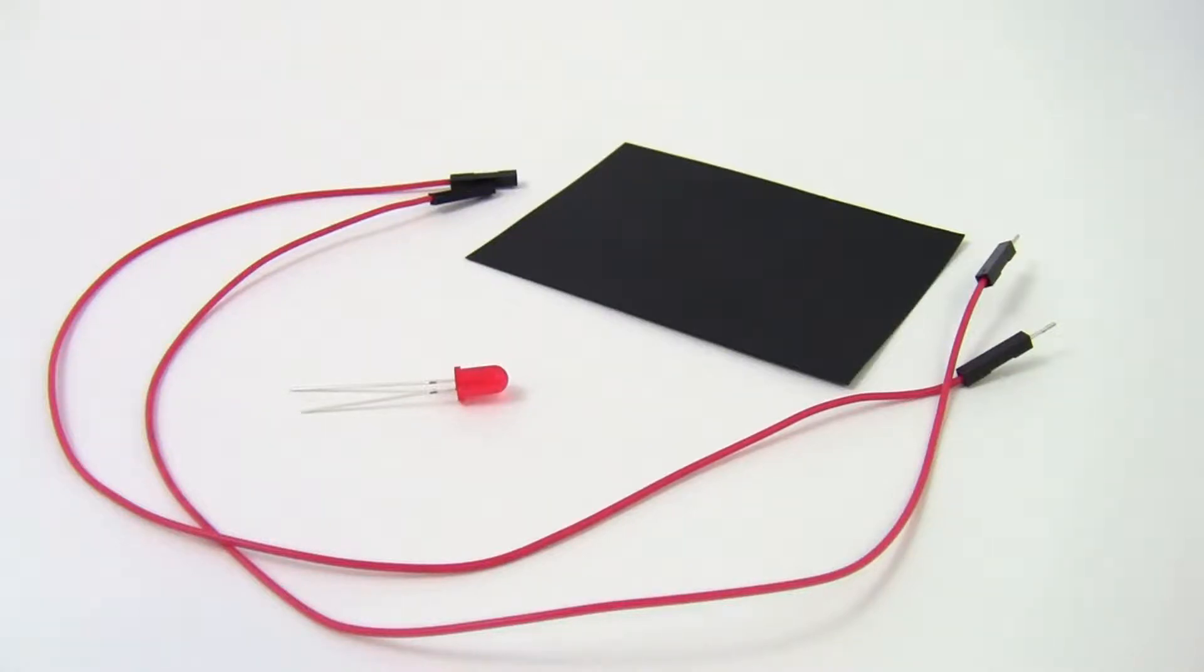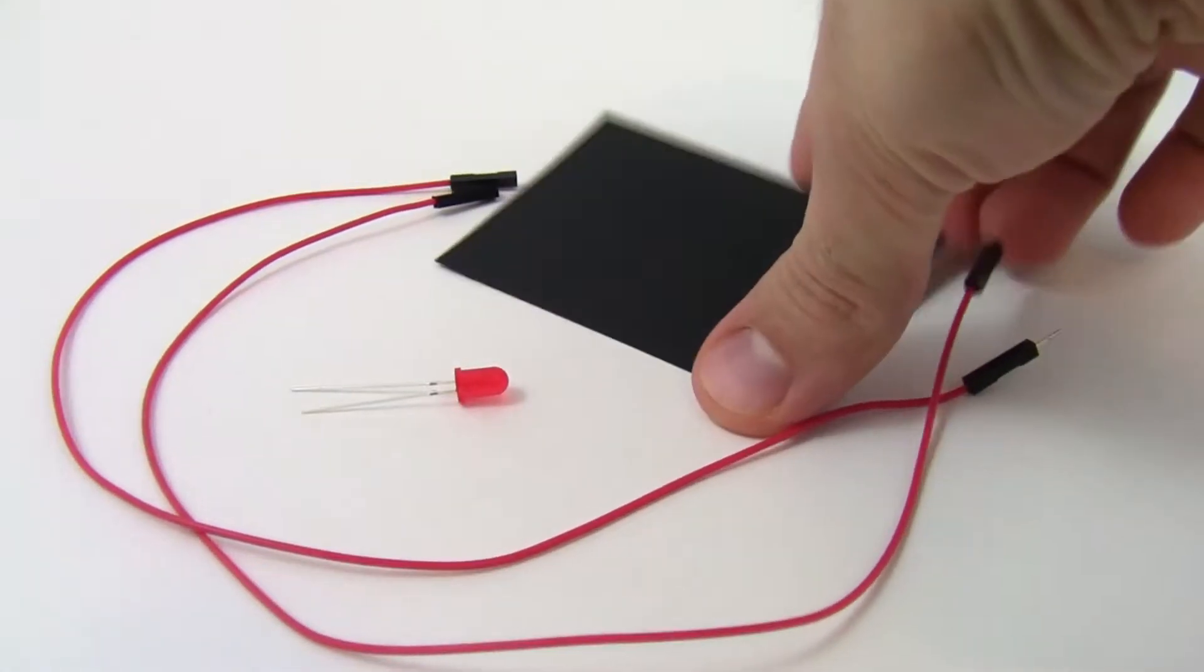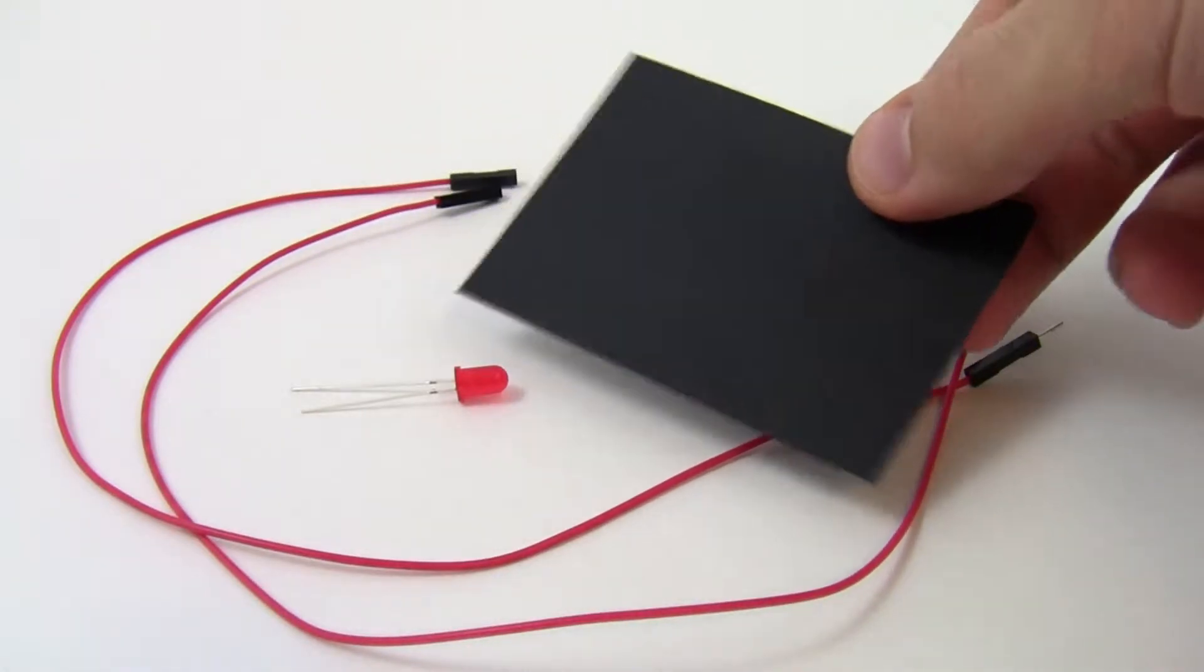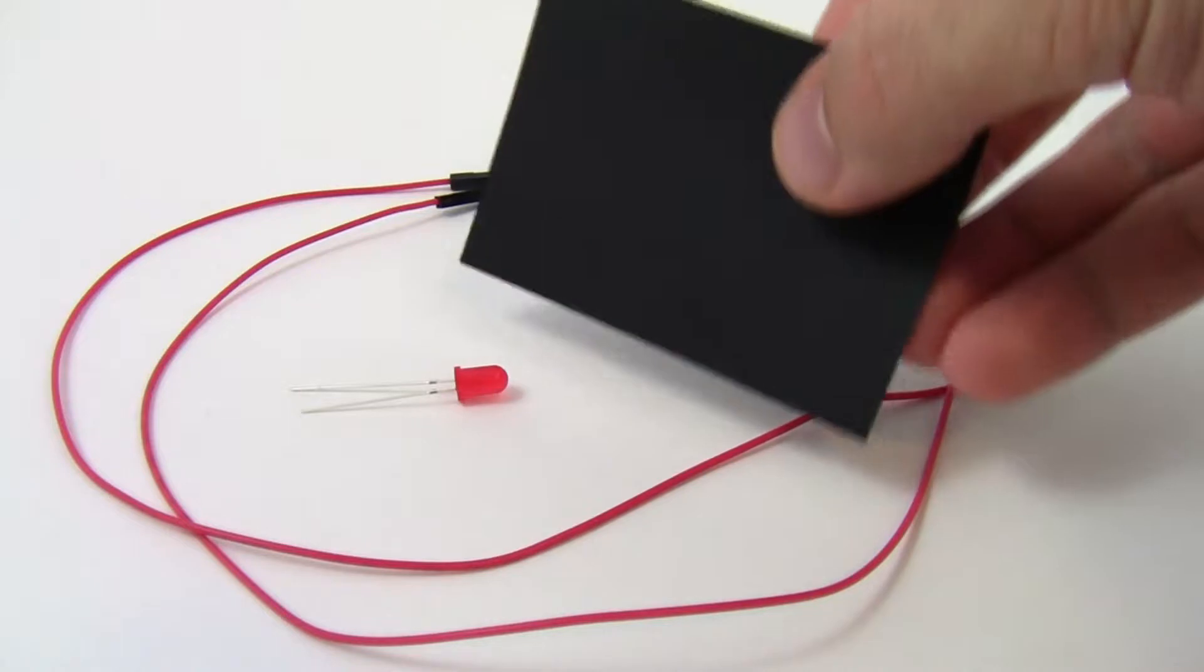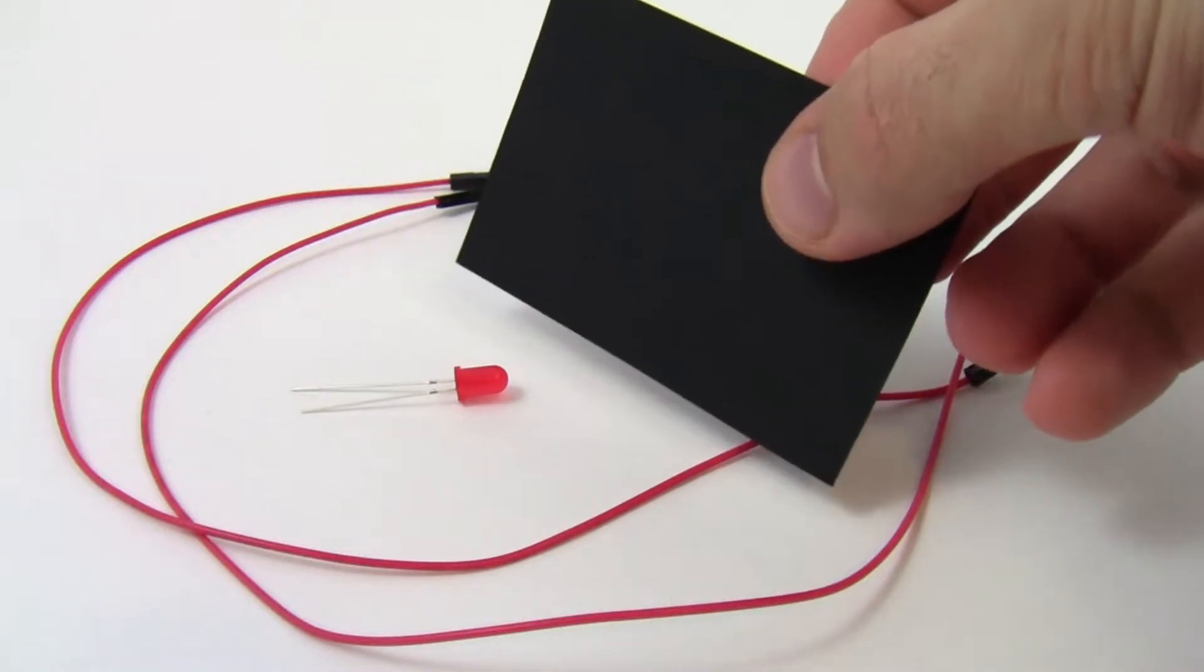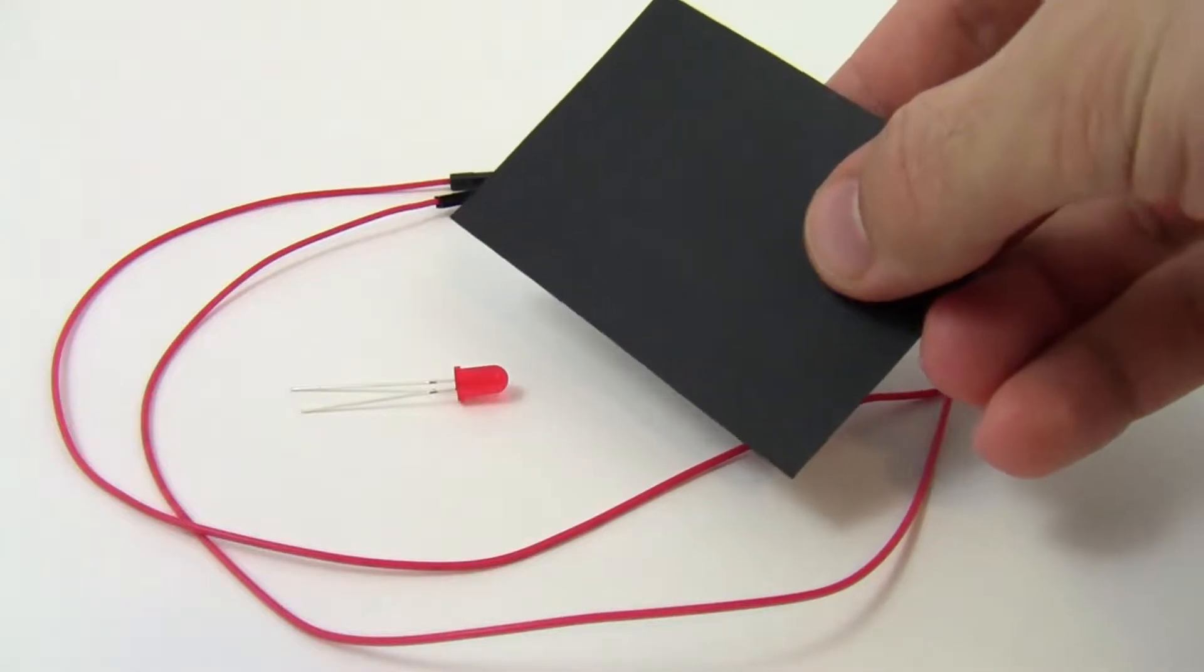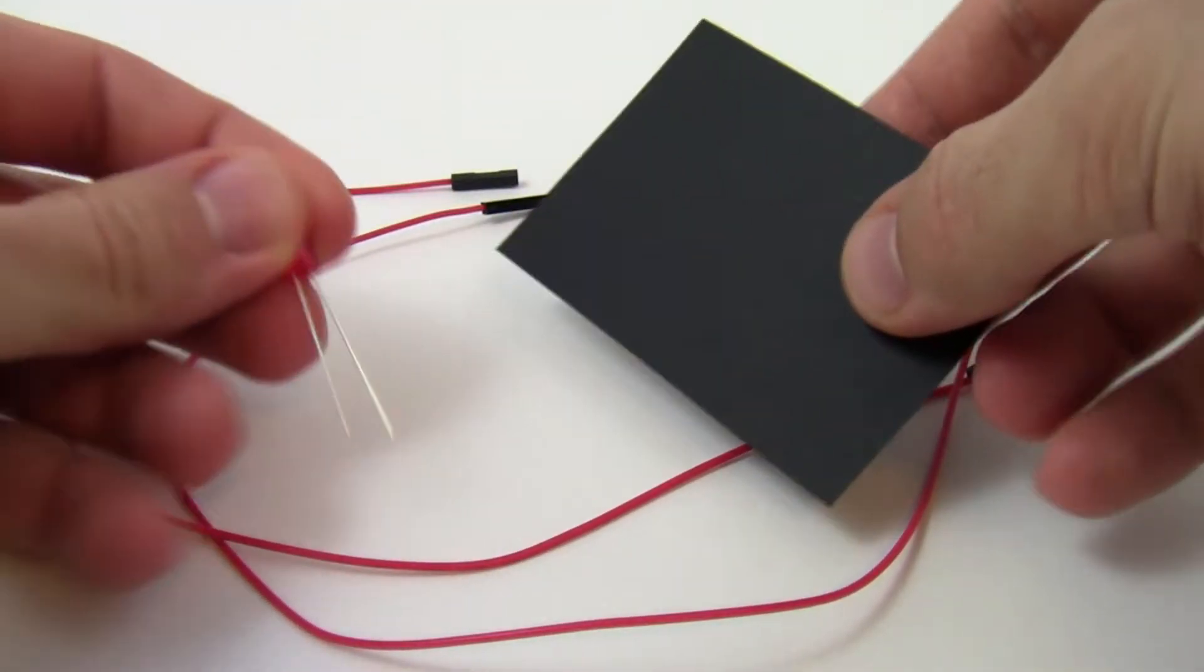This video will show you how to connect LEDs to your artwork, just using this little black piece of cardstock as an example. There are two different ways to do this. One is to poke a large hole in the paper and push the LED in from the back. The other is to poke two smaller holes in the paper and then push the LED's two leads in from the front.